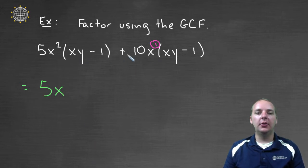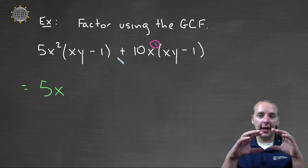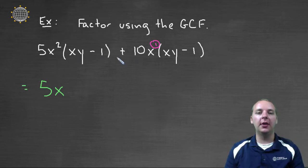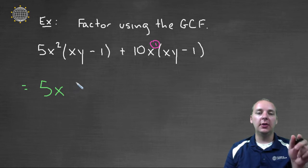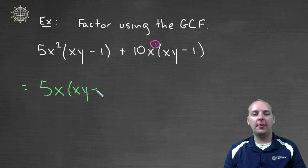And when you look at the two terms, they both have an xy minus 1 as a factor grouped together in parenthesis. So that's a common factor, and we can pull that out. And you'd have an xy minus 1.